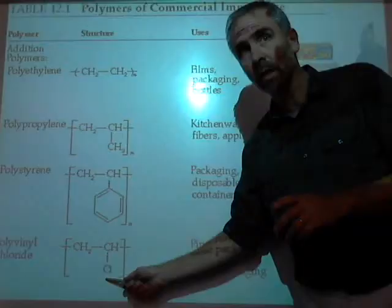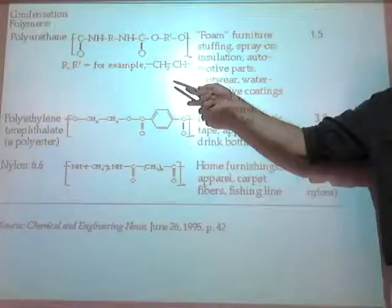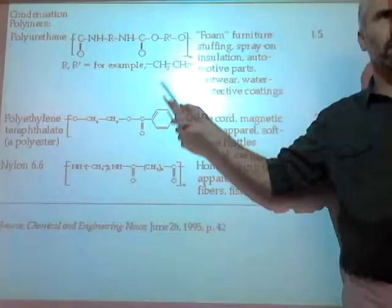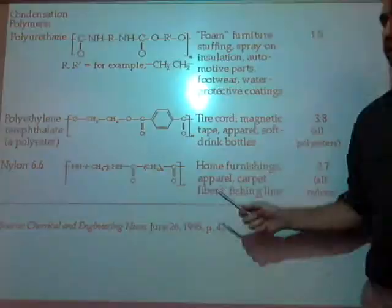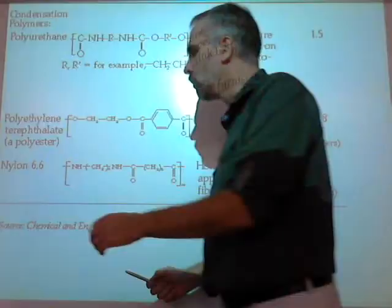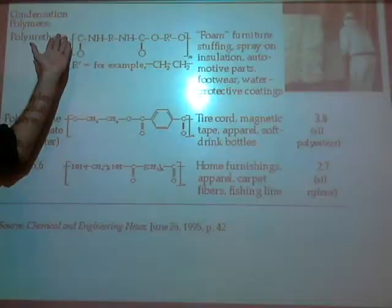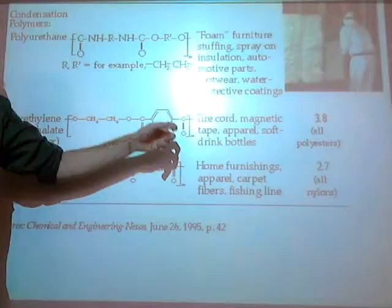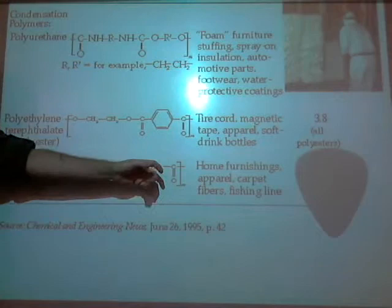Other polymers on the sheet include polyurethane — spray insulation, which I demonstrated — and nylon, which can be used for picks and various fibers, and polyester. I'm not going to ask you to memorize the long-chain formulas for polyurethane or nylon, but you should be able to recognize and work with polyethylene, polypropylene, polystyrene, PVC, and polyester — they're pretty short and should be easy enough.